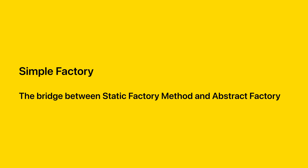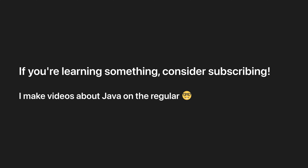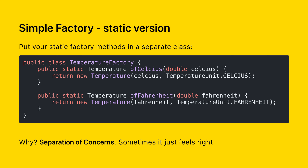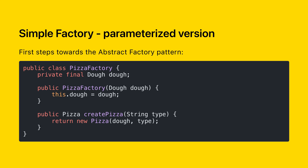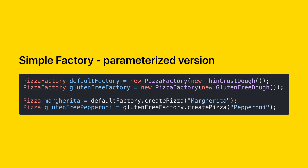Let's talk about simple factory, which is the bridge between static factory method and abstract factory, the most powerful factory pattern. Simple factory is super simple. The idea is to extract your factories into a separate class — sometimes it's just nicer to extract the creational logic into a new class. You don't need to just use static methods, though. Here, the pizza factory has an instance variable which is supplied to every pizza that the factory creates, so we can create specialized pizza factories depending on the type of dough we want to apply.